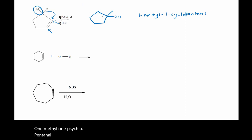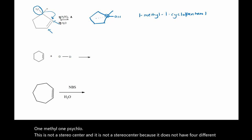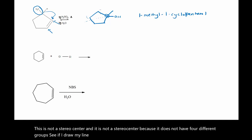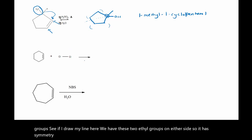Now this is not a stereocenter, and it is not a stereocenter because it does not have four different groups. If I draw my line here, we have these two ethyl groups on either side, so it has symmetry. So that is not a stereocenter.